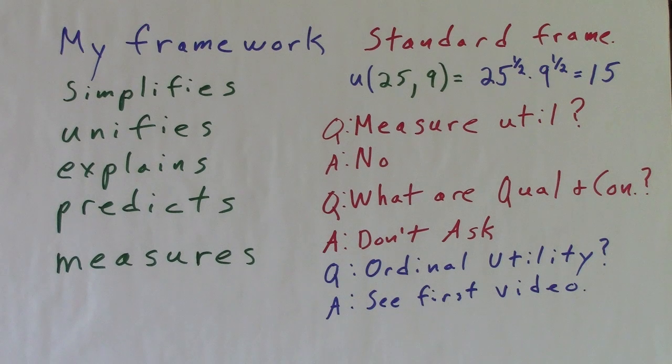These parametric functional forms are taken seriously enough for calibrated computer simulations. 25 albums on iTunes and 9 on Blu-ray gives me 15 utils if alpha is one half. Can we measure utility? No. What are quality and convenience? Don't ask. So for this equation, the immeasurable equals the uninformative.